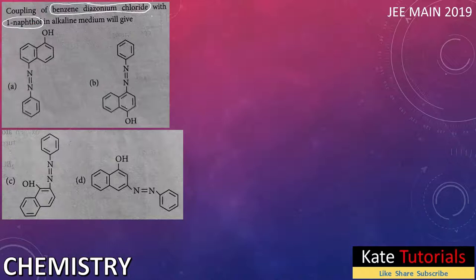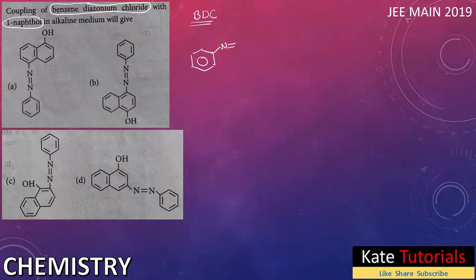Let me draw benzene diazonium chloride. BDC is the short form. This is a cyclic six-membered ring — cyclohexane. If I put resonance here, it becomes benzene. Diazonium means N≡N⁺, and there will be a Cl⁻ ion. So this is benzene diazonium chloride.